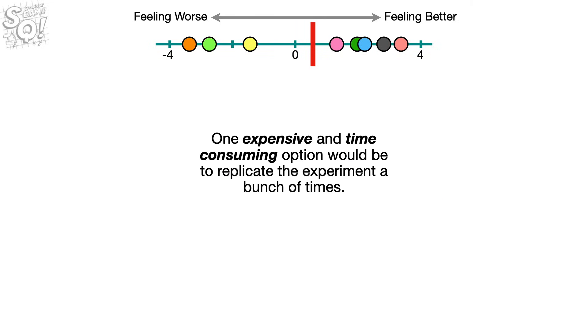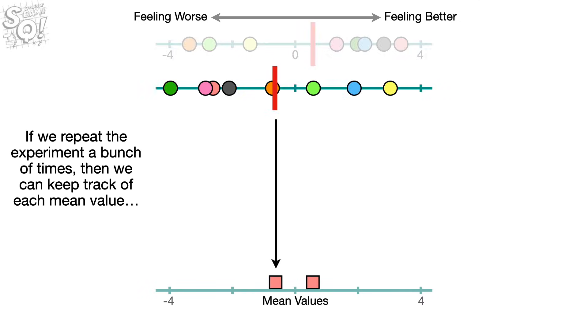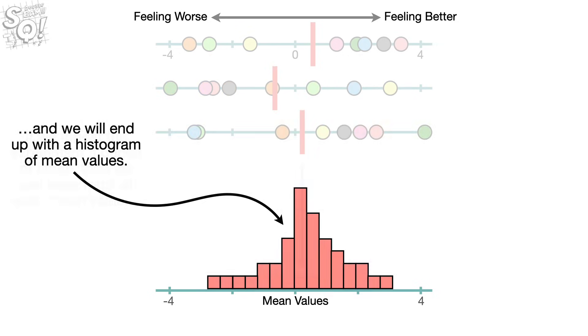Yes. One expensive and time-consuming option would be to replicate the experiment a bunch of times. If we repeat the experiment a bunch of times, then we can keep track of each mean value. And we will end up with a histogram of mean values.